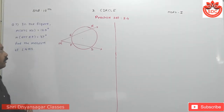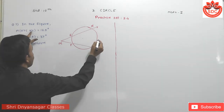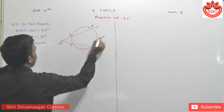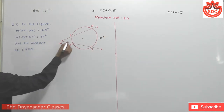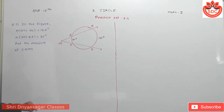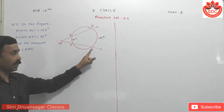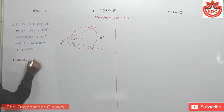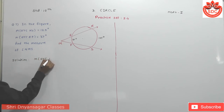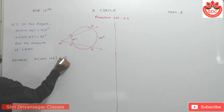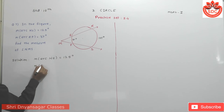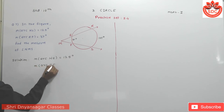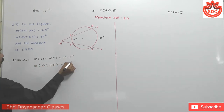Let's see the next question, question number 7. In this figure, arc NS is 125 degrees and arc REF is 37 degrees. Find the measure of angle NMS.